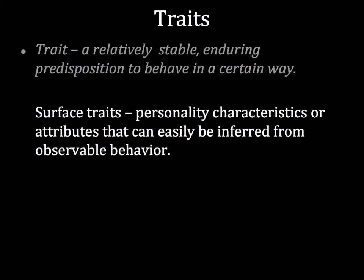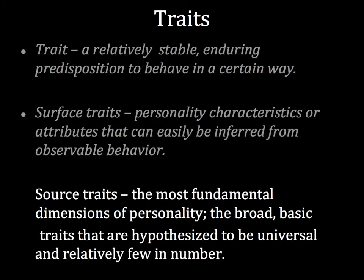Trait theorists further divide the types of traits a person has. Surface traits are personality characteristics or attributes that can be easily inferred from observable behavior. In other words, it's pretty easy to ascribe the trait of cheerfulness to someone who perpetually has a smile on their face. Source traits are the most fundamental dimensions of personality — broad, basic traits that are hypothesized to be universal and relatively few in number. A single source trait can potentially give rise to a vast number of surface traits.